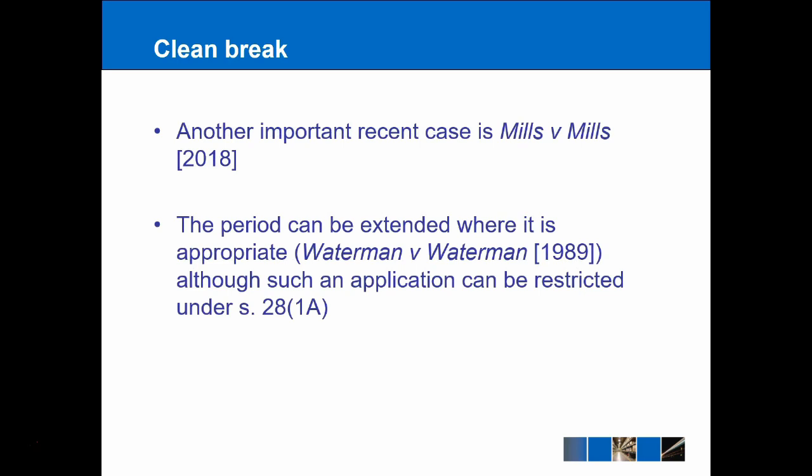Another important case in this area was Mills v Mills from 2018, which was covered in a podcast episode on UK Law Weekly. Make sure you check out that episode — it really deals with an idea that was popularised in the media about a 'meal ticket for life.' In other words, spouses who are trying to take advantage and essentially not have to work for the rest of their lives and instead become dependent on maintenance payments. Now, there is an opportunity for the maintenance payments to be extended where they need to be — say, for example, one of the children becomes ill and is no longer able to become independent at the age of 18. It may be necessary to go back to the courts and extend the period, and that's available under Waterman v Waterman, although that is restricted under Section 28. So while the periods can be extended, there has to be a good reason to do so.